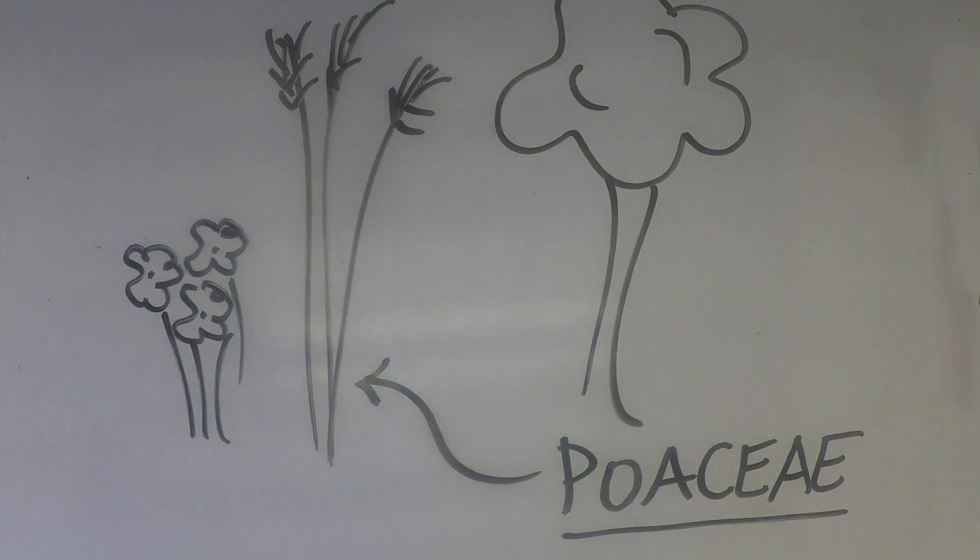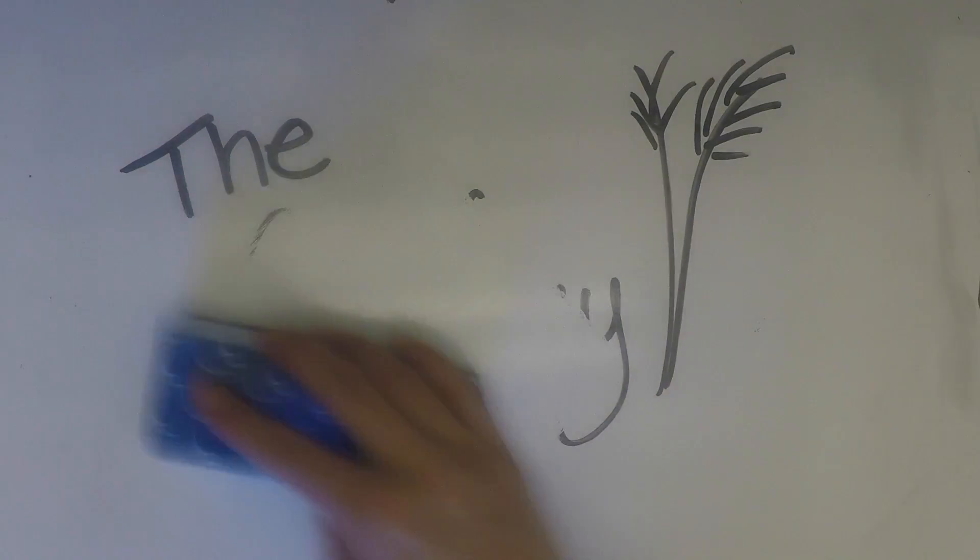Here we will focus on Poaceae, the Grass Family. Much of Kansas was originally prairie land dominated by grasses.